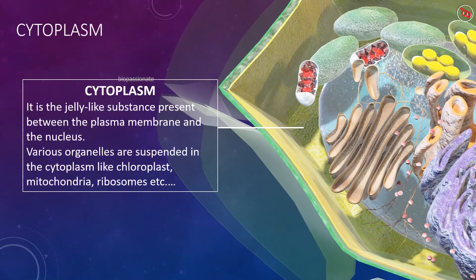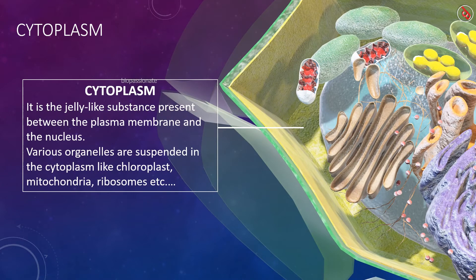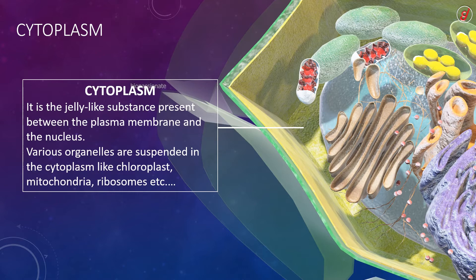A jelly-like substance present between the plasma membrane and the nucleus is called cytoplasm. Various organelles are suspended in the cytoplasm, such as chloroplasts, mitochondria, ribosomes, lysosomes, endoplasmic reticulum, and many more.